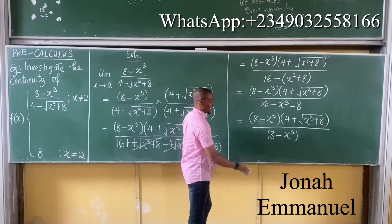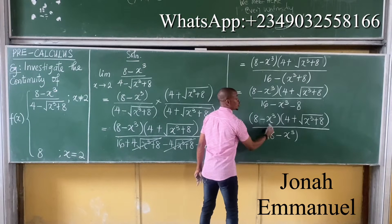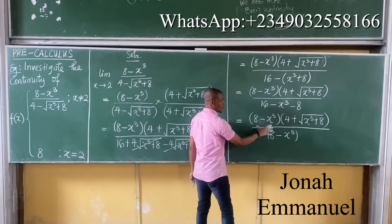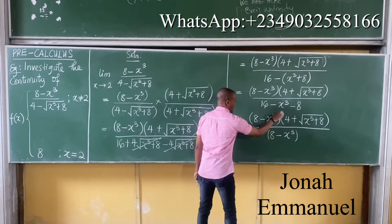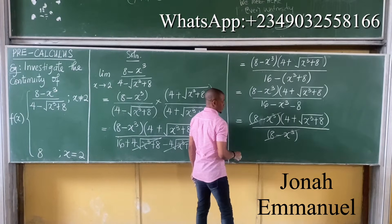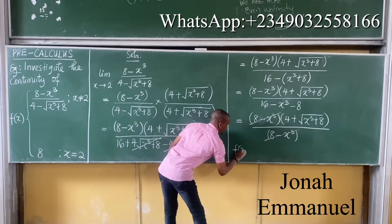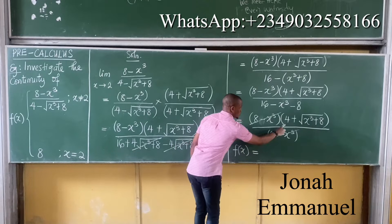So as expected, I've seen that the denominator can actually cancel out one of the terms of numerator, which is this. So at this point, this can now cancel this. It's now reducing the function f of x to be equal to just 4 plus square root of x cubed plus 8.